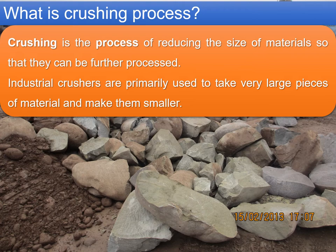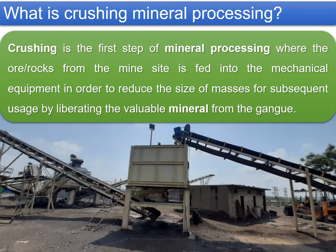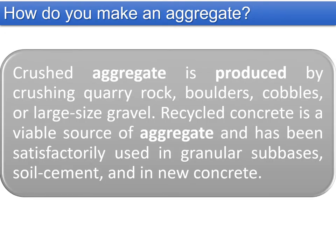In mineral processing, crushing is the first step where ore or rocks from the mine site are fed into mechanical equipment to reduce the size of the masses, liberating valuable minerals from the gauge. Crushed aggregates are produced by crushing quarry rocks, boulders, cobbles, or large size gravels. Recycled concrete is also a viable source of aggregate and has been satisfactorily used in granular sub-bases, soil cements, and in new concrete.